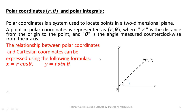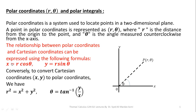Next, these are the transformation equations. If we have to move from the Cartesian coordinate system into the polar coordinate system, then we have the transformation equations: x is equal to R cos theta and y is equal to R sine theta. And for the reverse process, we have R squared is equal to x squared plus y squared and theta is equal to inverse of y over x.